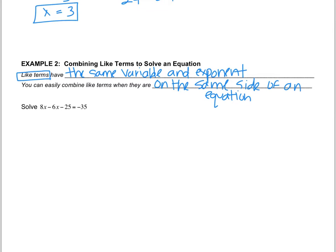When you look at this equation right here, 8x minus 6x, you can see that those are the same terms. They both have the same variable and they both have the same exponent, which is they don't have an exponent. So 8x minus 6x just easily gets combined to 2x and then you can bring everything else down.